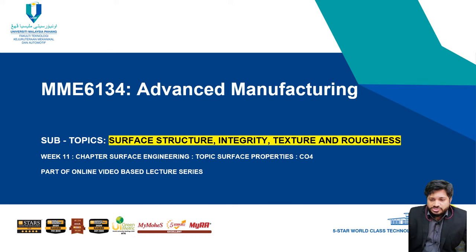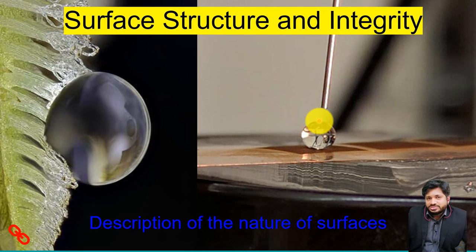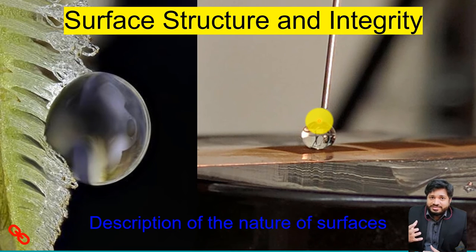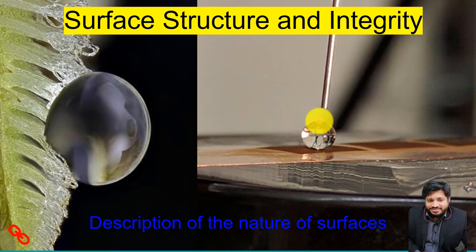When we talk about surface engineering, it is all related to surface structure and integrity. Surface engineering is important in the development of products because the surface of the product identifies its functionalization. As an example, you can see on the left-hand side a plant called Salvinia molesta.